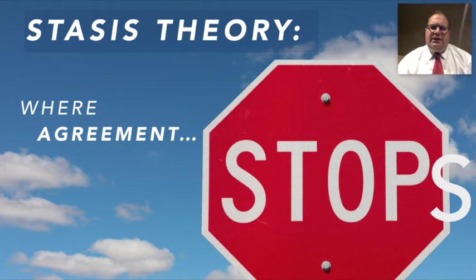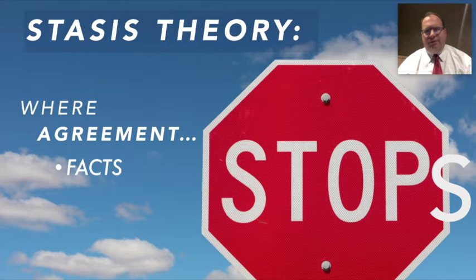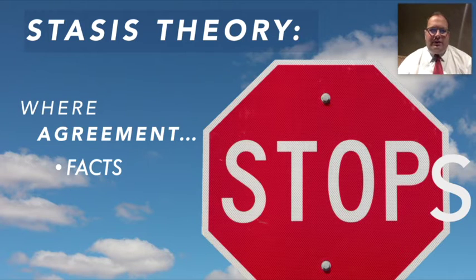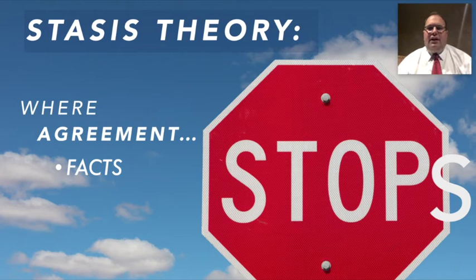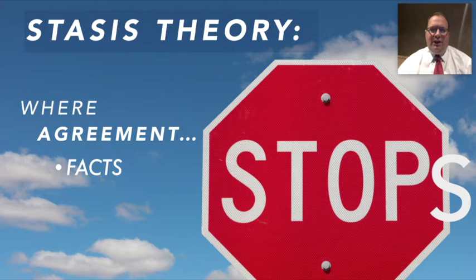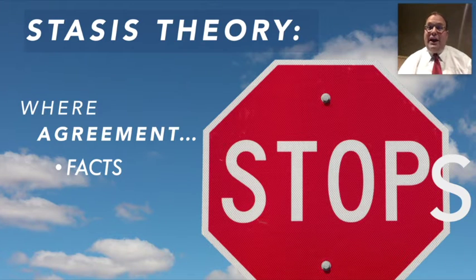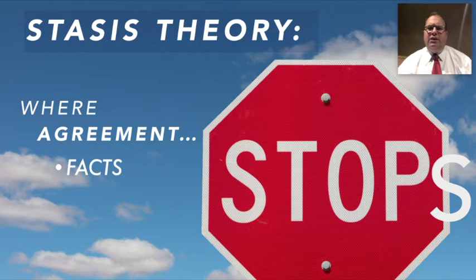The first stage of stasis theory is facts. We have to first come to an agreement about what the facts of the situation are — what actually happened. We establish this via eyewitness accounts, or perhaps security cameras that caught the incident. We bring all these sources together and find out: are we in agreement about what actually happened? If we're not in agreement, we can't take this argument any further. If everyone is in agreement on the facts, then we can move on to the next stage.